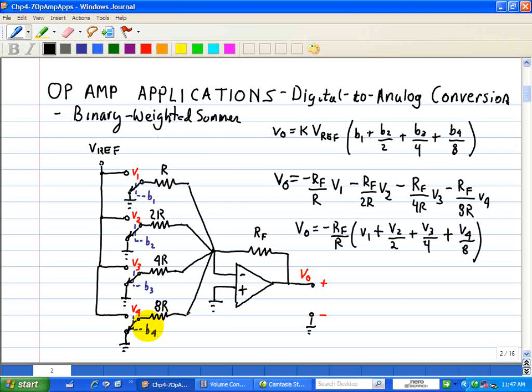Now, when the bit is low, or a voltage zero connected to ground, the switch is on the lower position, connecting the related input to ground. And when the input is high, or voltage equal to V reference, the switch is in the upper position, connecting the related input to the reference voltage, VRF.